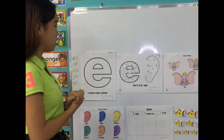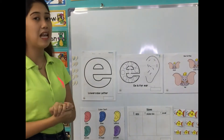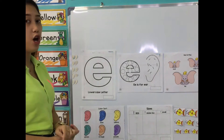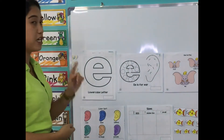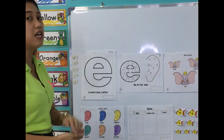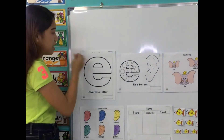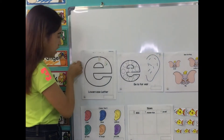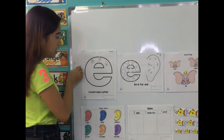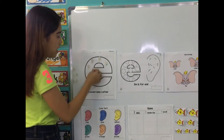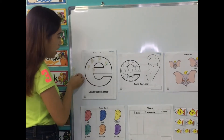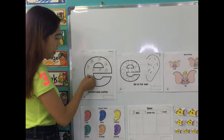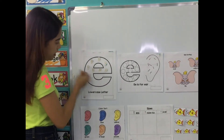We will learn today the lowercase letter E. And how about we paste all the letters, all the ears inside the letter E. E is for ears. Eh. Ears.